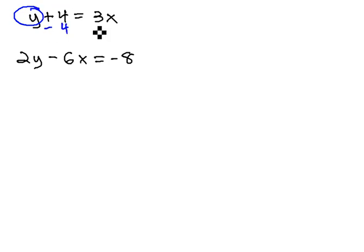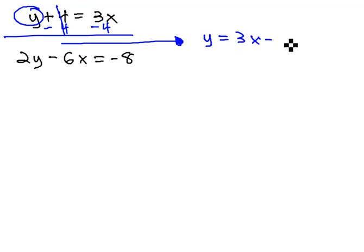In the first equation, the y is really easy to get alone by subtracting 4 from both sides. We don't quite have enough space, so let's move it over to the right here. That'll give us y equals 3x minus 4.